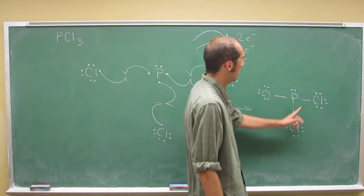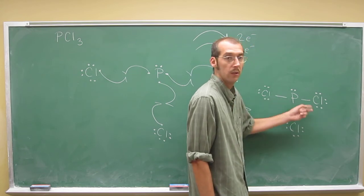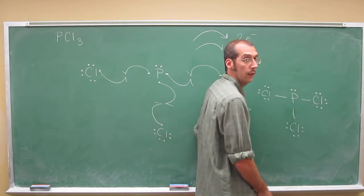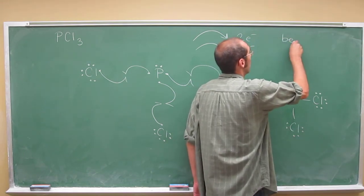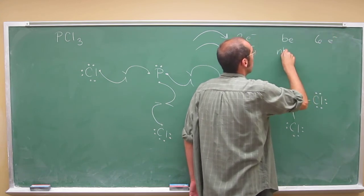So there's these three covalent bonds. Right? All three of them have two bonding electrons in them. Right? So, two, four, six bonding electrons.